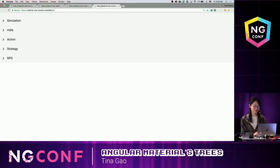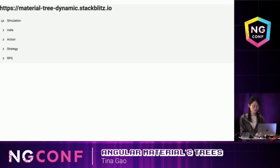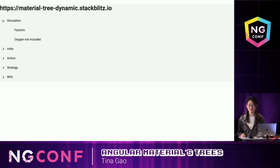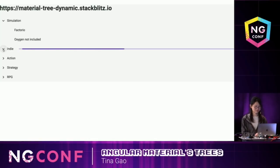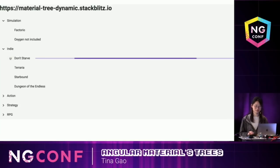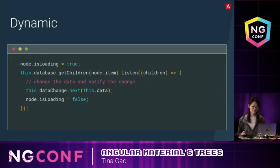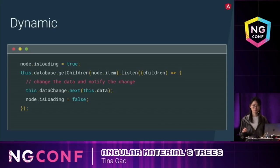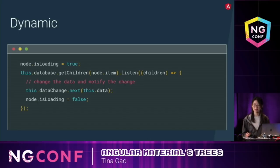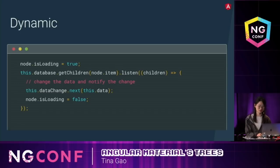The next demo is dynamic tree. When users toggle a tree node, we can see a progress bar, and after one second the children are loaded into the tree. In this dynamic loading tree, each node has a loading status. When users toggle the tree node, we fetch the children from the database by an async call. When the children return, we refresh the tree with the updated data and change the loading status.